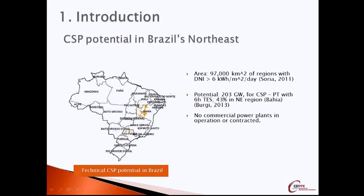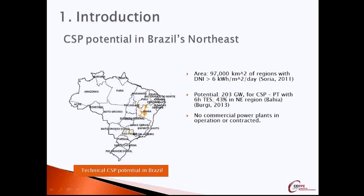Brazil has a large technical and economic potential to deploy CSP plants, especially in the northeast region, where around 97,000 square kilometers receive direct normal radiation of more than 6 kilowatt-hours per square meter per day. While the Brazilian government is interested in developing CSP plants under the current auction scheme, the country has not yet found a way to do that. For example, at the end of 2014, eight CSP projects with a total capacity of 200 megawatts were registered to participate in an auction, but no CSP plant was contracted.